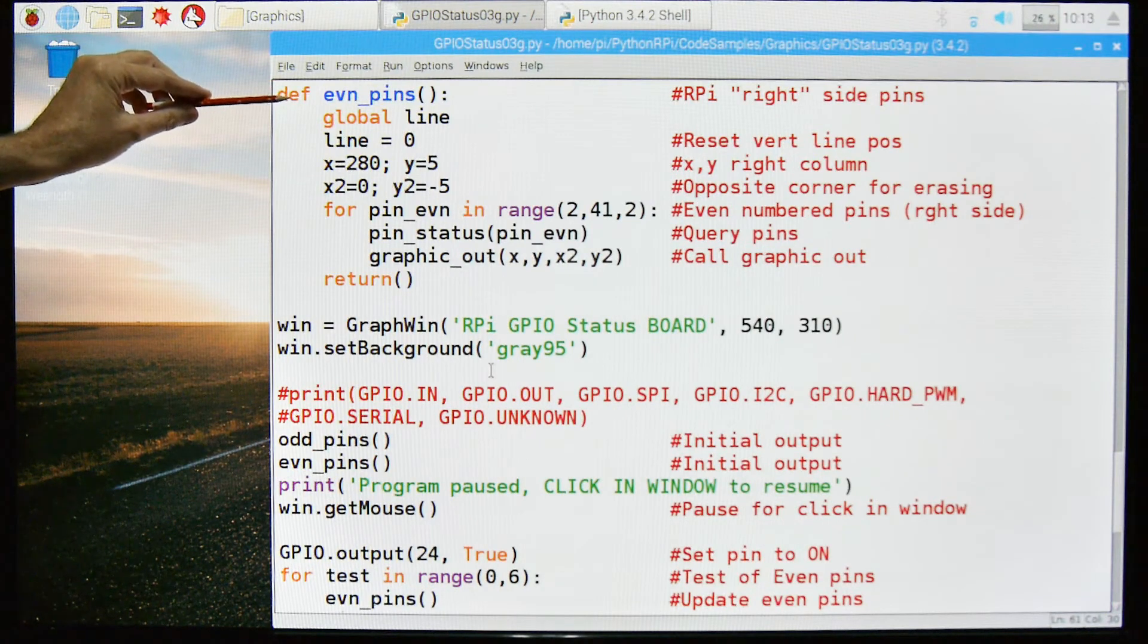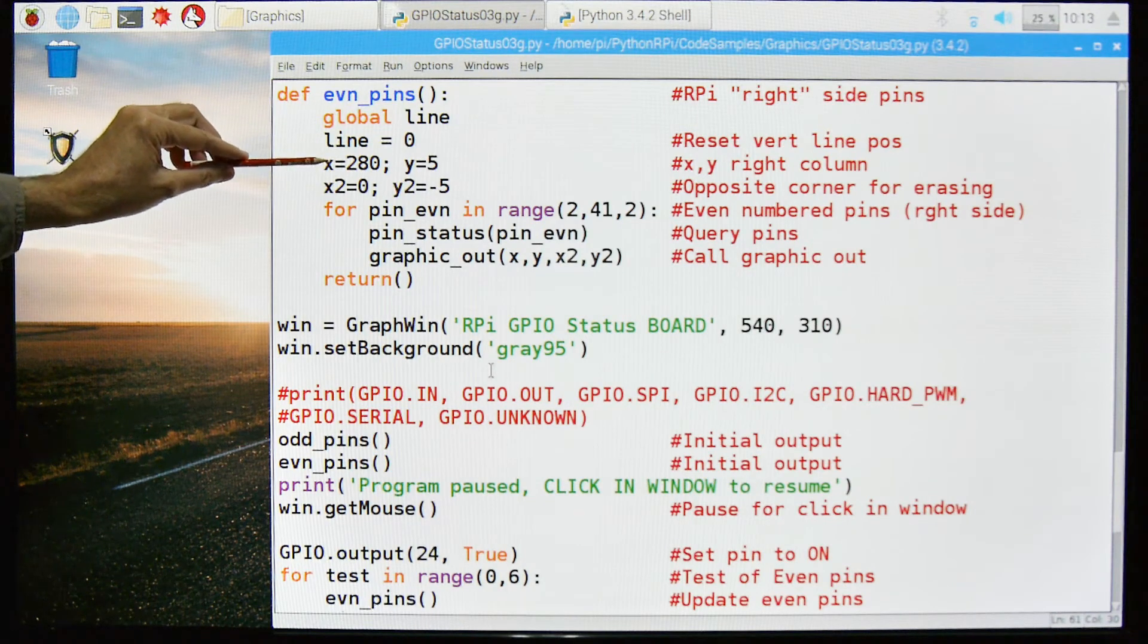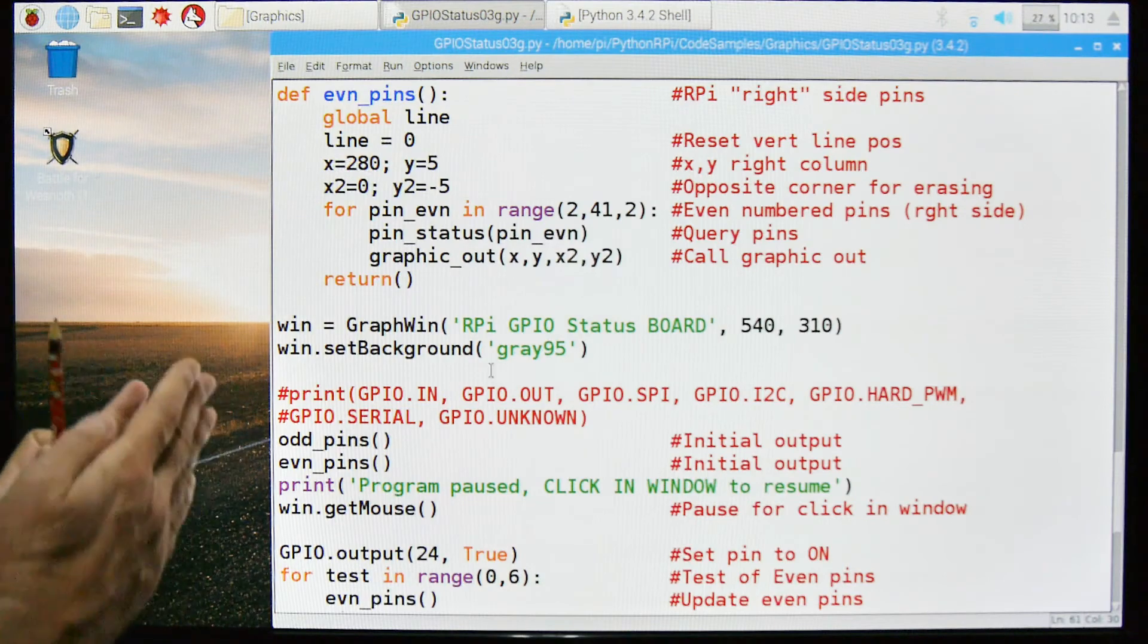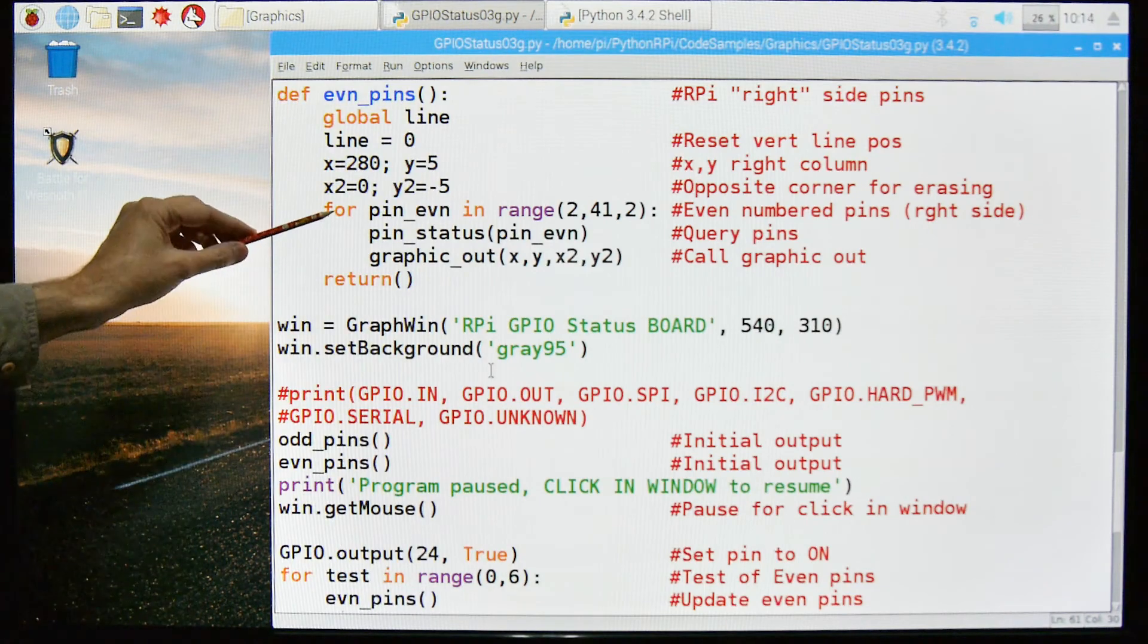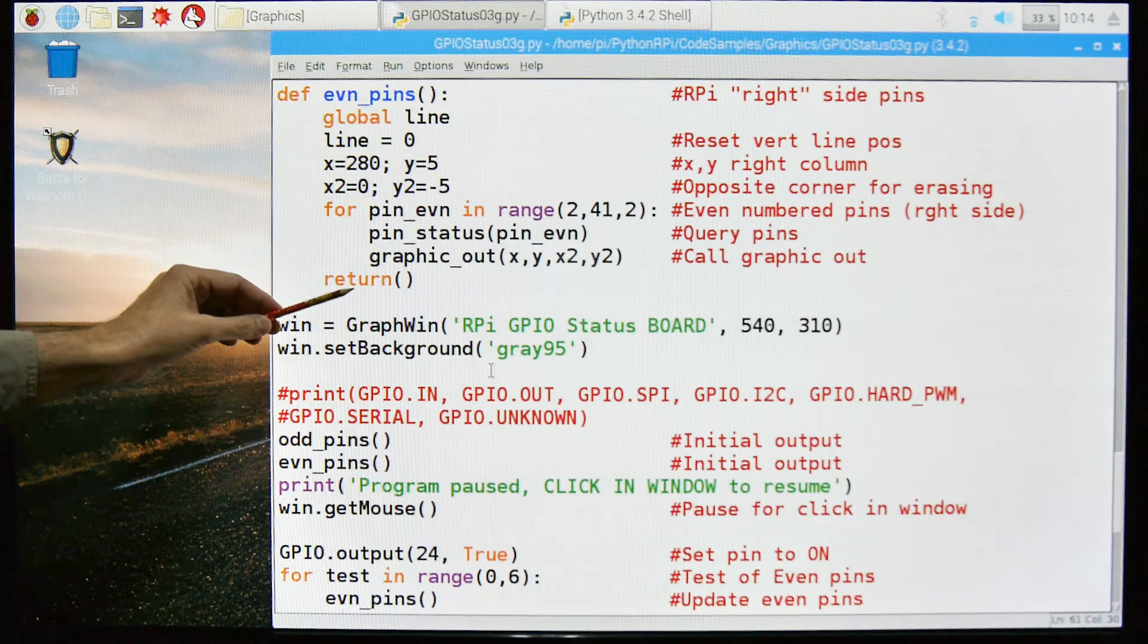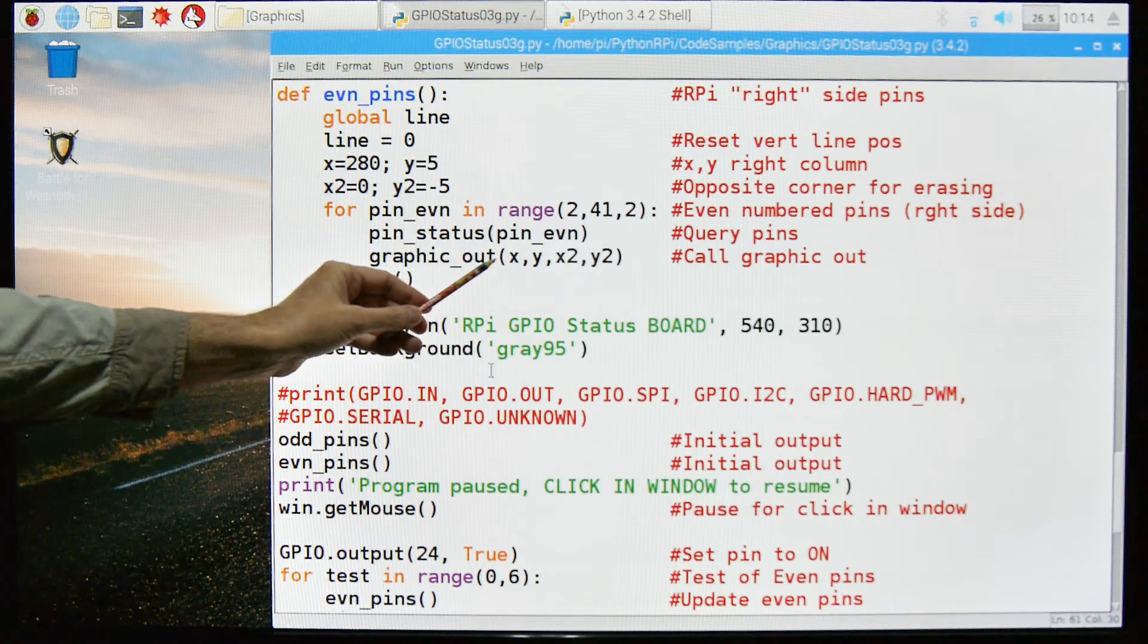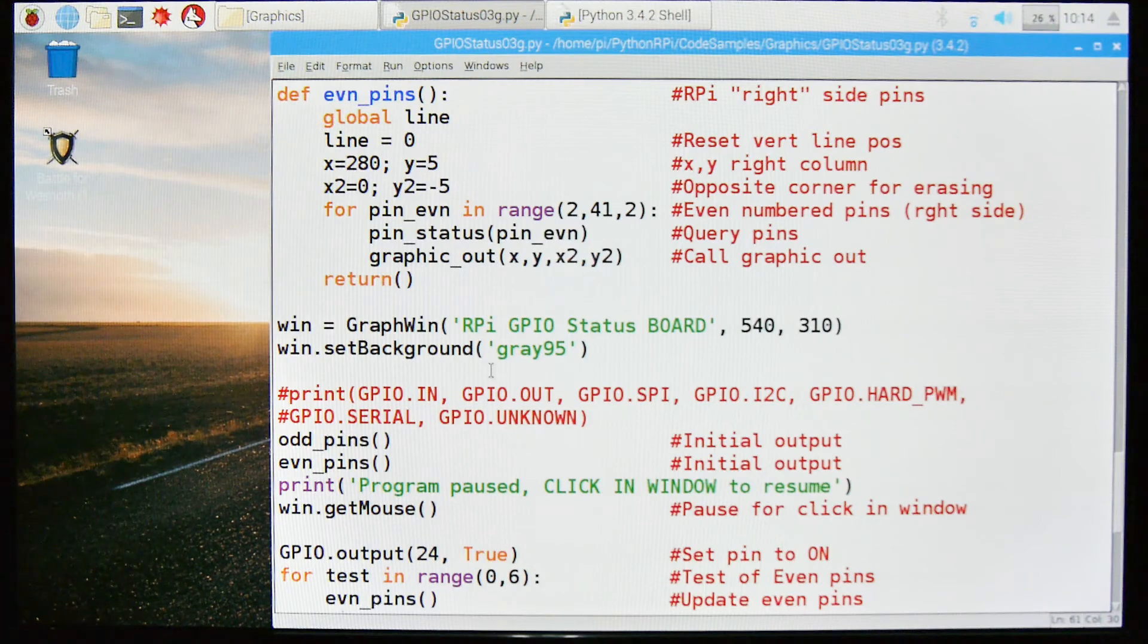The even pins are pretty much the same thing. All the functions, all the parts of this function are the same, except the offsets for the X and Y have to be different because we're going to print two columns, and this is the right-most column. So then we're going to do this, we're going to start at 2, go to 41, by 2s, that'll give us all the even pins. Then we'll call our pin status, so pin even, graphic out, so this is pretty much the same thing except we're using even pins rather than odd pins as last time. And then we'll return that.